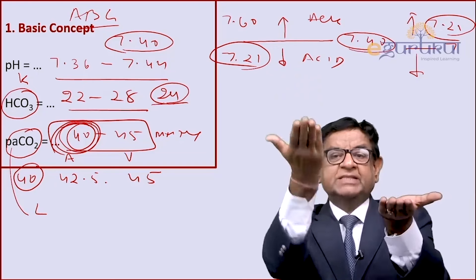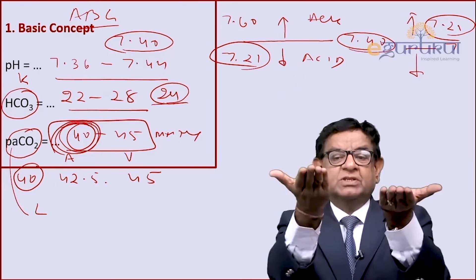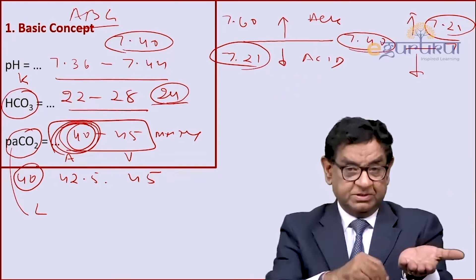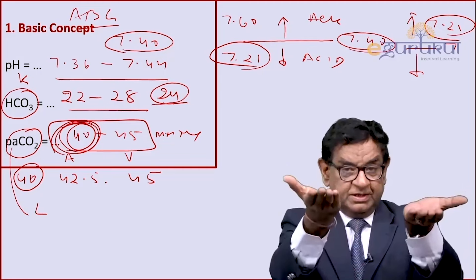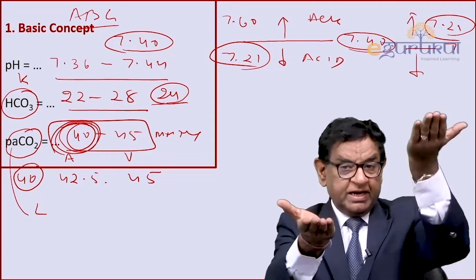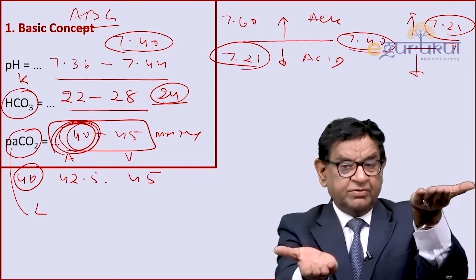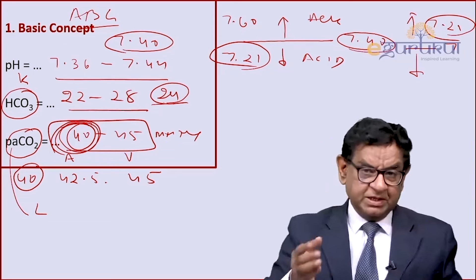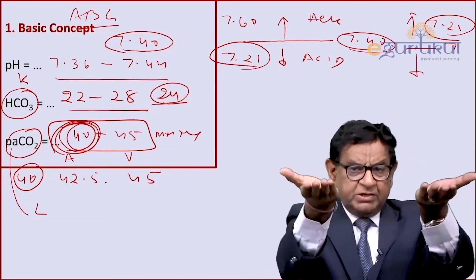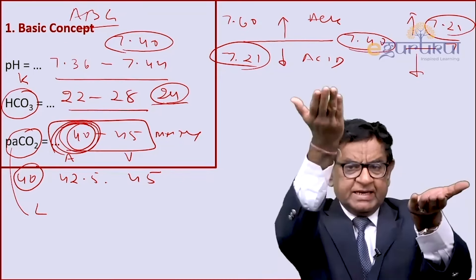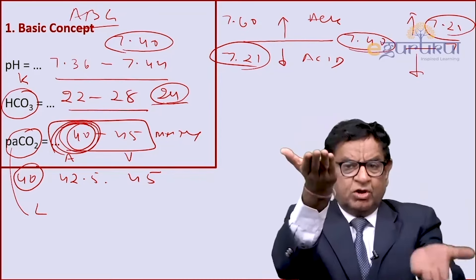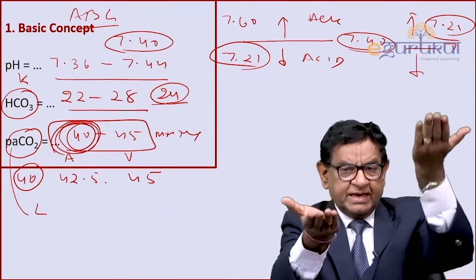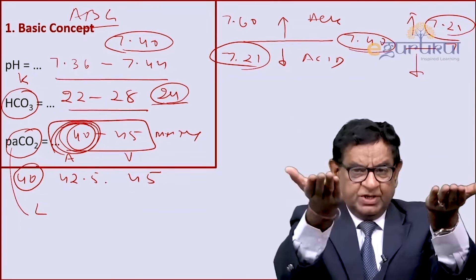Gain of acid is acidosis; loss of alkali is acidosis. Gain of alkali is alkalosis; loss of acid is alkalosis. In summary, acidosis is gain of acid or loss of alkali, and alkalosis is gain of alkali or loss of acid.